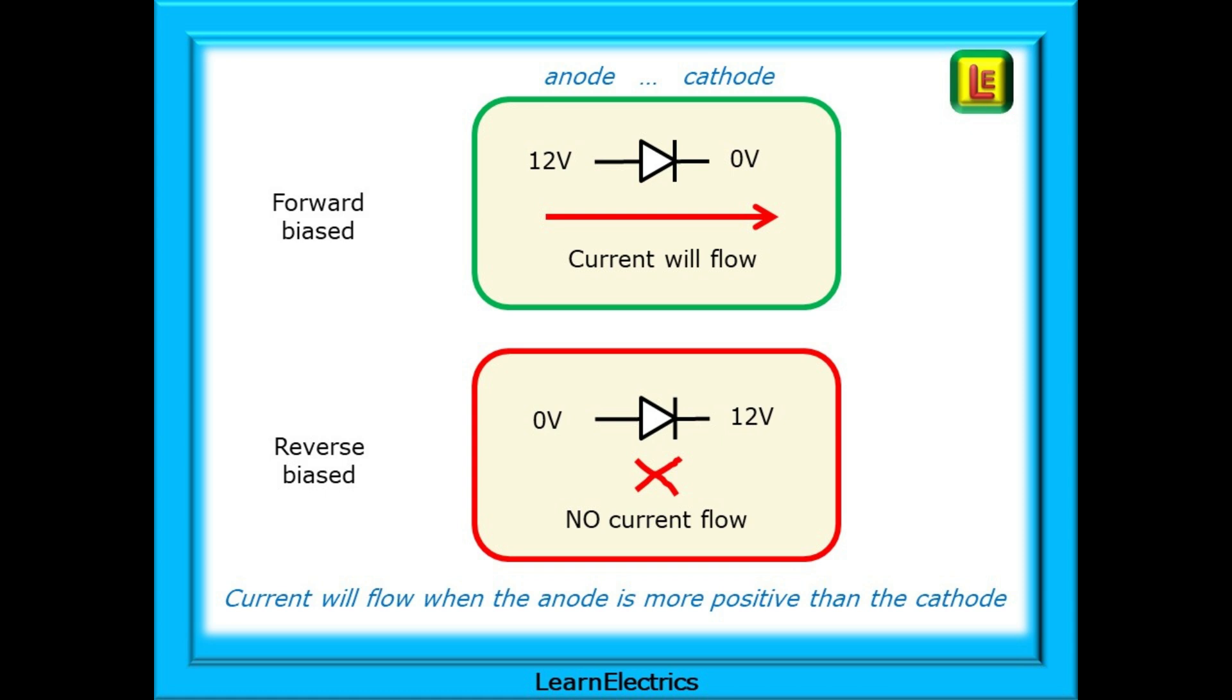Generally, we can say that current will flow when the anode is more positive than the cathode. There are, however, some diodes that have the specific property of conducting in the reverse bias mode when the voltage exceeds a certain value in the wrong direction. And more on this in another video.